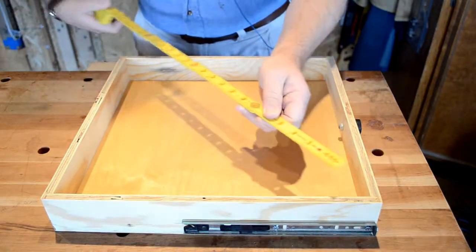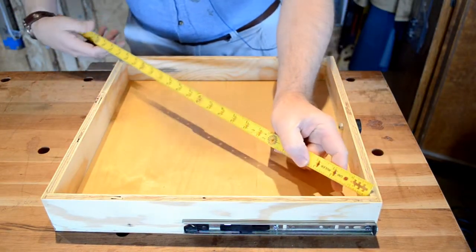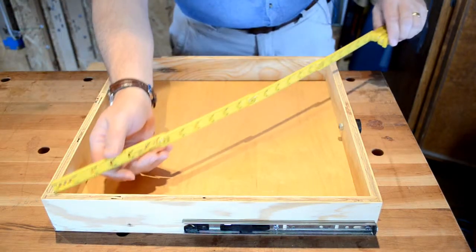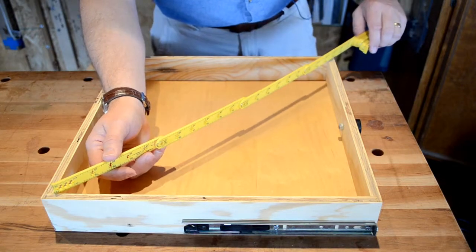The Uni-Ruler of course functions as a standard folding rule. This is a great tool for being able to check square on boxes and other construction. But that's only the beginning of its capability.